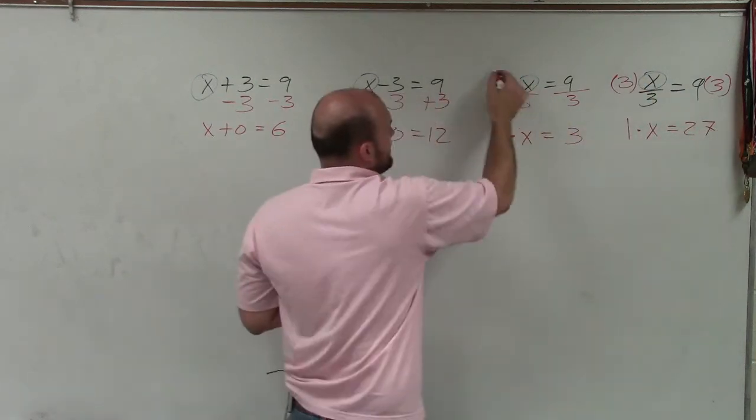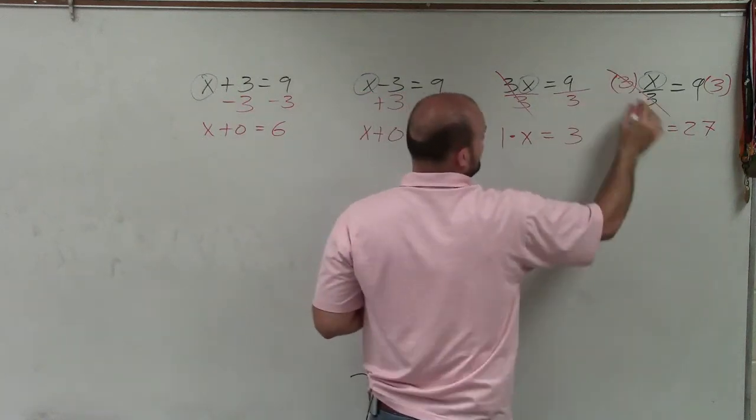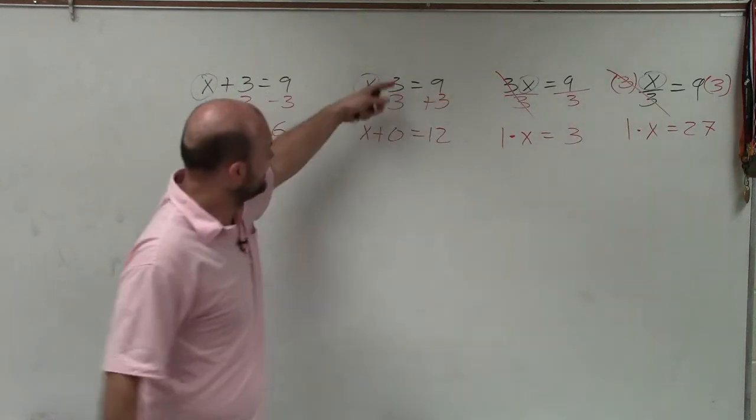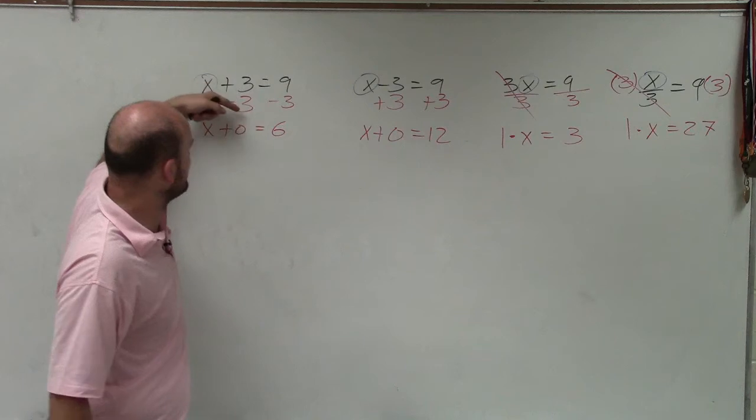OK, 3 divided by 3 goes to 1. 3 divided by 3 goes to 1. Negative 3 plus 3 is 0. Positive 3 minus 3 is 0.